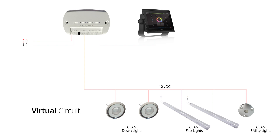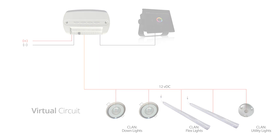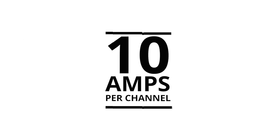For example, the down lights clan can be red, while the flex light clan is blue and the utility lights clan is green. This also applies to light intensity. This means you can put multiple light families on one channel, as long as you don't exceed the maximum amp draw of 10 amps per channel.